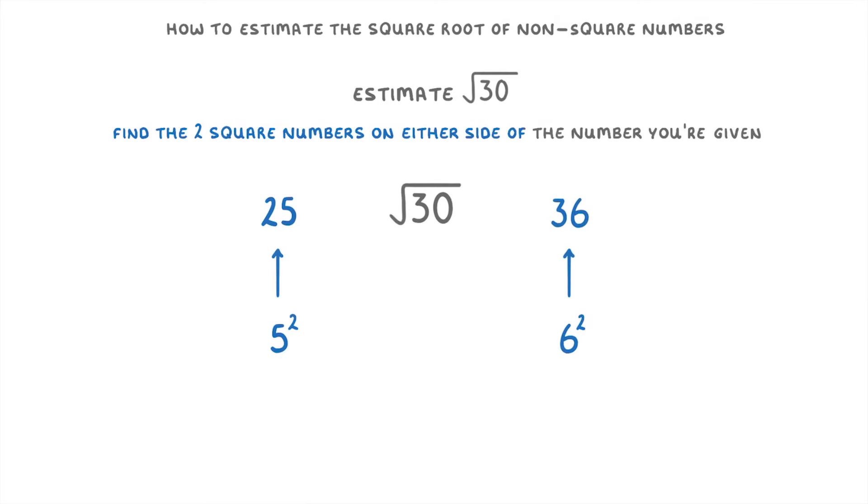Because 30 is roughly in the middle of 25 and 36, we could estimate that our answer is roughly in the middle of 5 and 6. So maybe 5.5, which when given to one decimal place is the square root of 30.